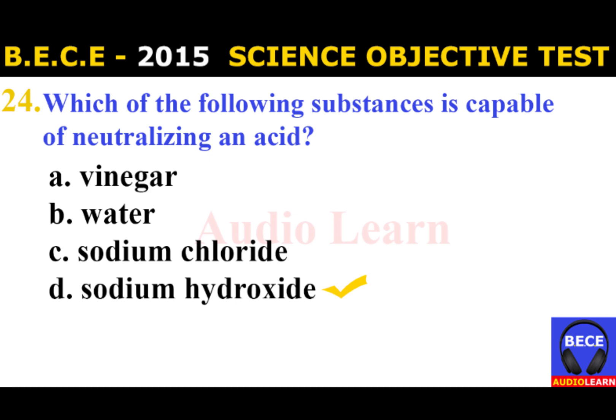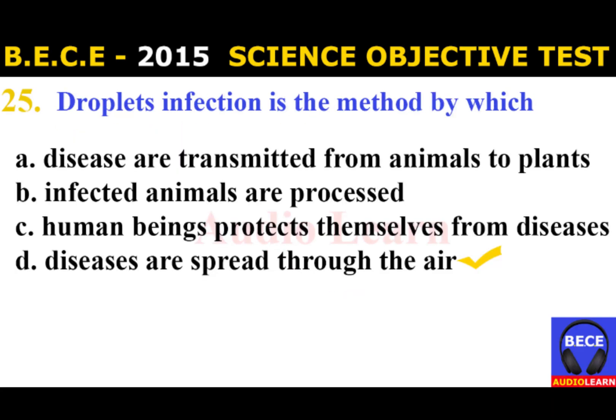Number 24: Which of the following substances is capable of neutralizing an acid? A. Vinegar, B. Water, C. Sodium chloride, D. Sodium hydroxide. The answer is D. Sodium hydroxide. The substance capable of neutralizing an acid is sodium hydroxide.